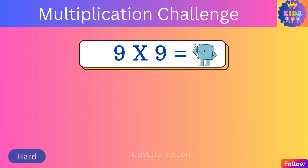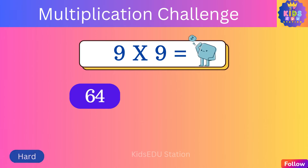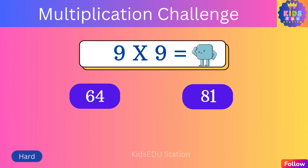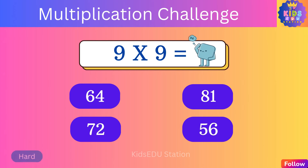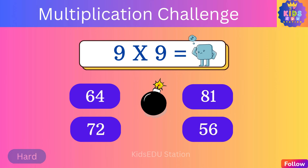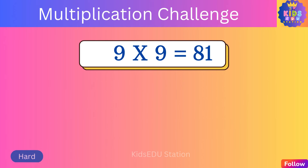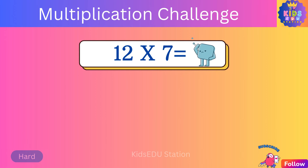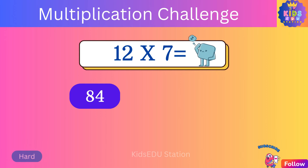What is nine times nine? Sixty-four, eighty-one, seventy-two, fifty-six. Nine times nine is eighty-one. What is twelve times seven? Eighty-four, seventy-two, one hundred eight.